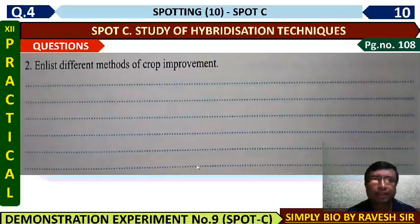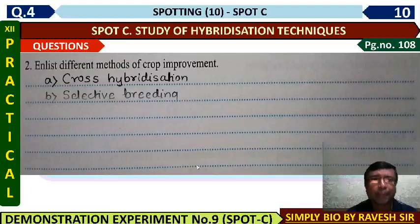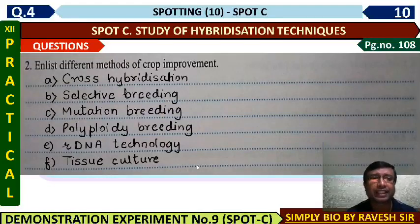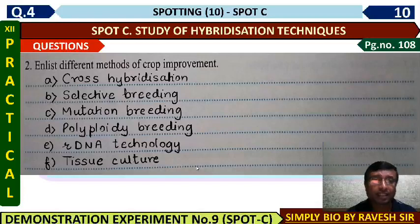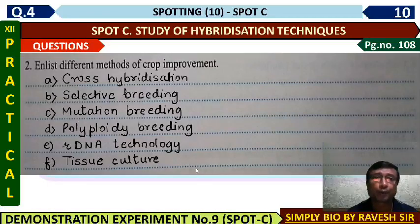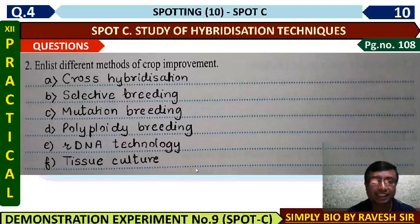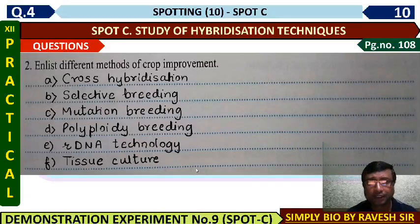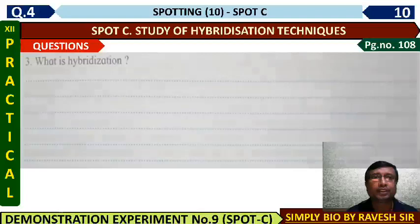Different methods of crop improvement include: cross hybridization and selective breeding, mutation breeding, polyploidy — where sets of chromosomes increase, modern biotechnology, and tissue culture. So these are the different methods of crop improvement.